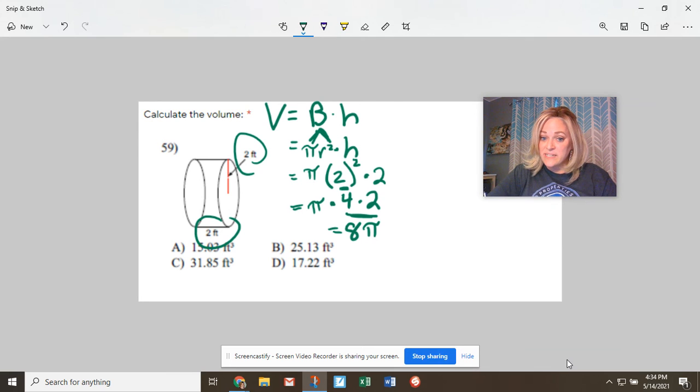And that is a totally acceptable answer. But if you look at these answers and notice there are no pi's, they're all in decimal format, then that means you actually need to multiply 8 times pi, whether you use the pi button or the 3.14 in reference to pi, but you can figure that out by multiplying 8 times pi.